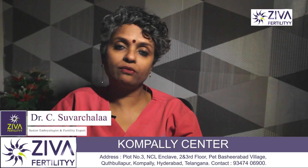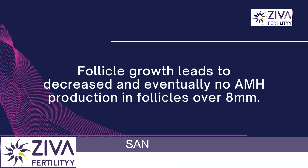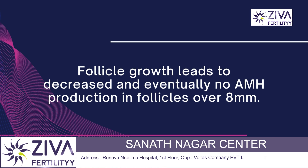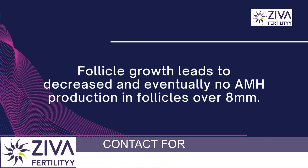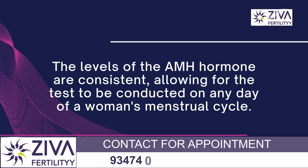There is a correlation: follicles at 4mm or less — the pre-antral and small antral follicle stage — are the ones producing the hormone. This production decreases and also stops as the follicle grows. Any follicle that is more than 8mm in diameter stops production of AMH. Therefore, AMH levels are fairly constant and the AMH test can be done on any day of your menstrual cycle.